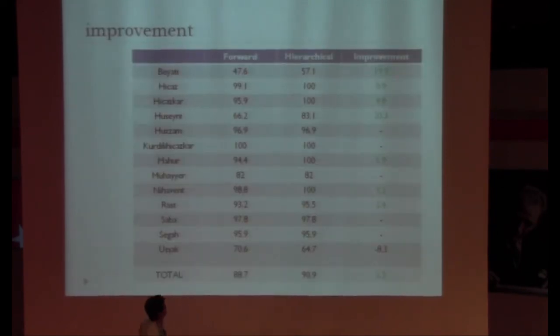Here is the comparison between the straightforward algorithm and the hierarchical approach. We have improvement for almost everything except for the Ushak makam. So while trying to better predict the Beati makam, we have some trade-off on the Ushak makam. The performance of Ushak drops around 8.3%. But overall, we have 2.3% better classification.